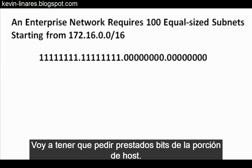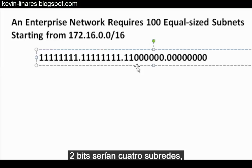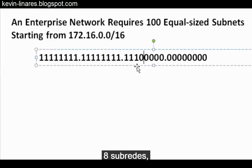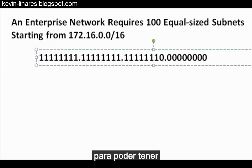I'm going to need to borrow bits from the host portion. If I borrow one bit, I have two subnets. Two bits would be four subnets, eight subnets, 16, 32, 64, 128. I'll need to create 128 subnets to meet the requirement of having 100 equal-sized subnets.